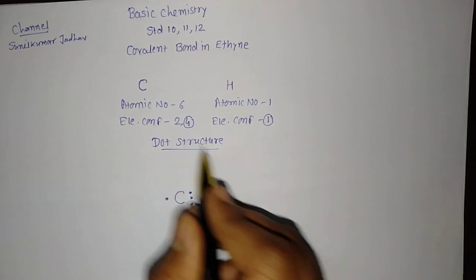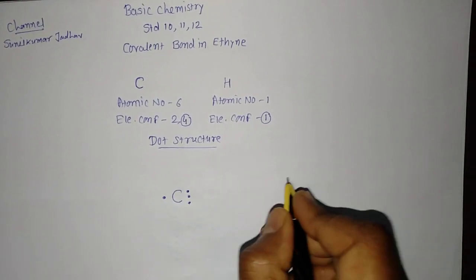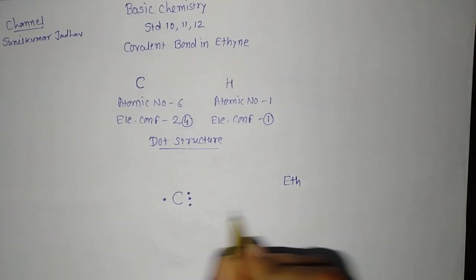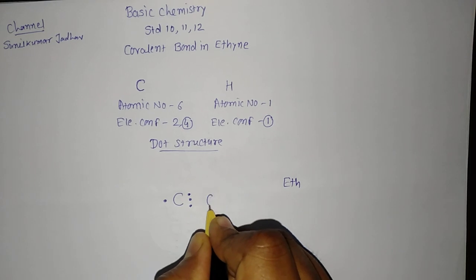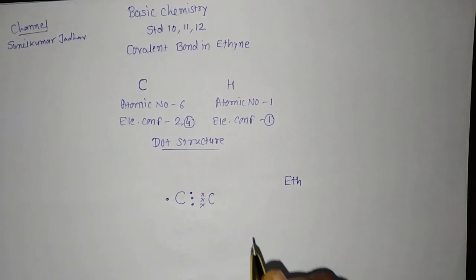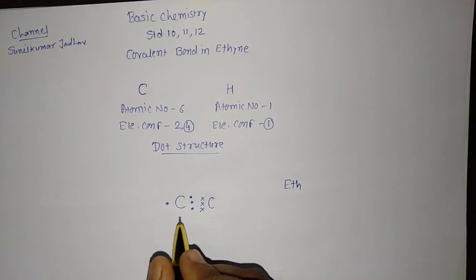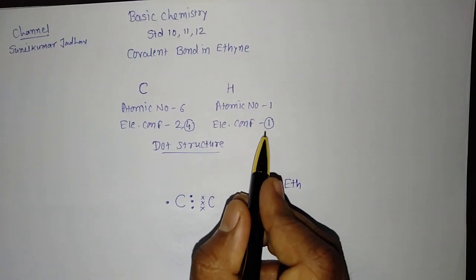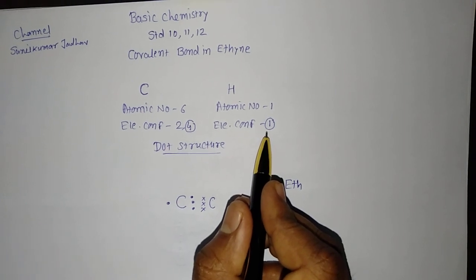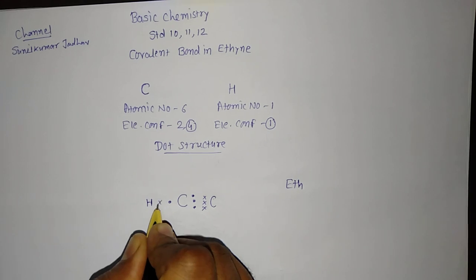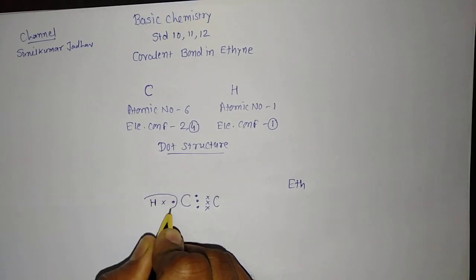Similar way, I should take another carbon. You know eth means two number of carbons. So, I will take it as carbon, 1, 2 and 3 electrons are there. Now, for hydrogen it requires one more electron to complete its first orbit that is with number 2. So, here first of all I will put one hydrogen and it will make a single bond with this carbon.